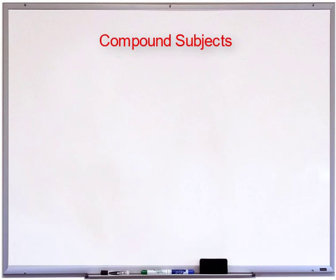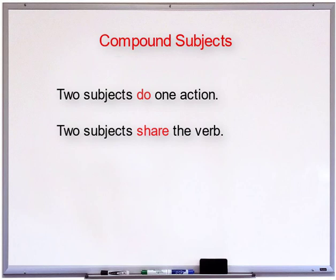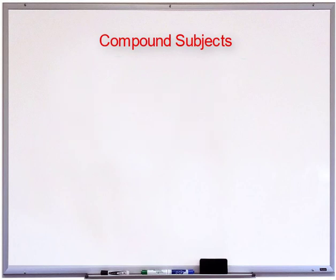What makes a compound subject in a sentence? Simply, when two subjects do one action, that sentence has a compound subject. In other words, when two or more subjects share the same verb. How can compound subjects be joined?